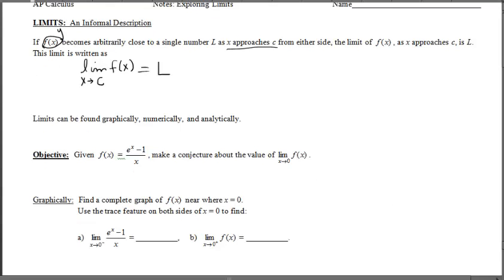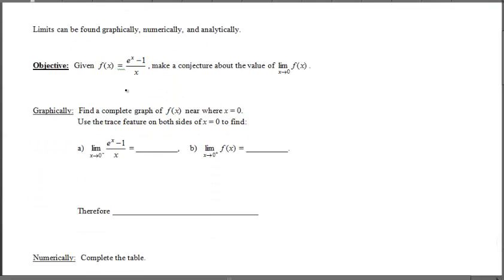Let's look at this function right here. The function f of x is equal to the natural exponential e to the x minus 1 over x. It asks us to make a conjecture about the value of the limit as x approaches 0 of this function. What are the y's going to as we target the x values of 0? We're going to look at finding the limit first graphically.